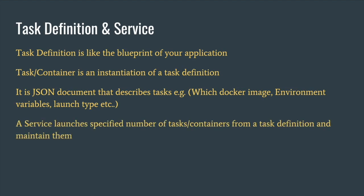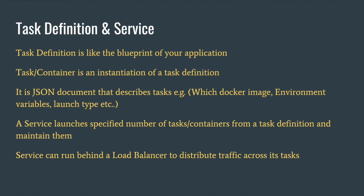Once you have defined the task definition, you can launch a service in ECS. The service requires you to specify which task definition to use to spin up containers, and also how many tasks or containers you want running from that task definition. You can specify a desired count of containers to have running at all times. For example, if you say you need five containers running the backend application, the service will make sure that if any container goes down, it spins up another and maintains that desired count. You can also run a service behind a load balancer, which we'll do in this application.